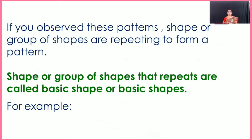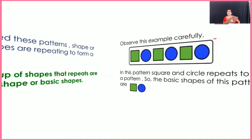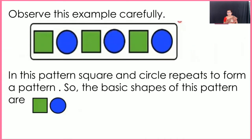If you observe these patterns, shapes or groups of shapes are repeating to form a pattern. Shapes or a group of shapes that repeats are called the basic shape or basic shapes. For example, observe this pattern carefully. In this pattern, a square and a circle are used repeatedly to create a pattern, so the square and circle are known as the basic shapes of this pattern.